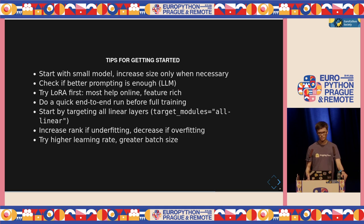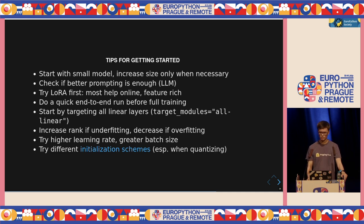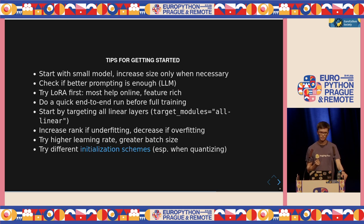With LoRA, you can typically get away with a higher learning rate. If you're using full fine-tuning and found a certain learning rate works well, try ten times that for LoRA fine-tuning. Also, since you have more memory available, you may be able to use a higher batch size, making training a little quicker. Finally, I'd recommend looking at the initialization options for adapters. Especially if you're quantizing the model, we lose a little precision, but the LoRA adapters can actually offset that loss if we initialize them correctly — so that's an option which can help with quantized models.